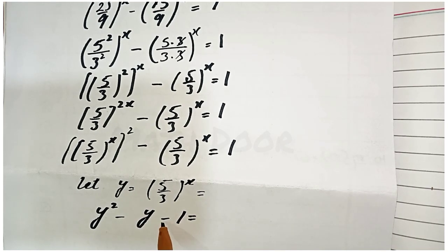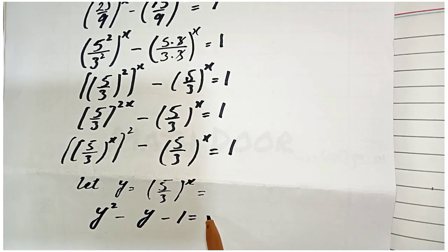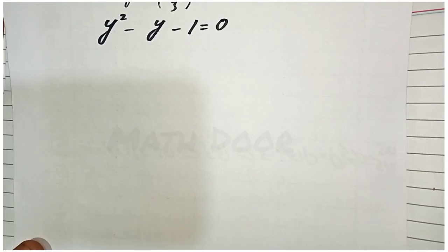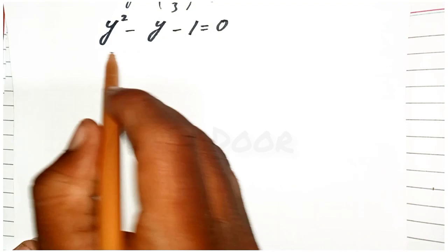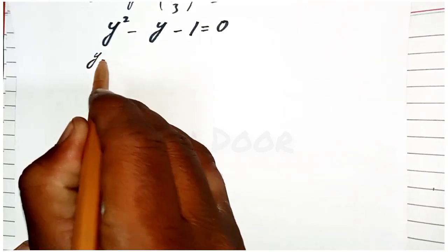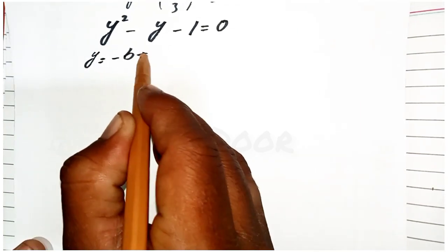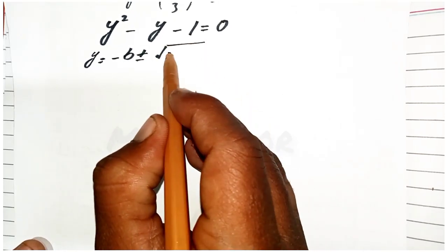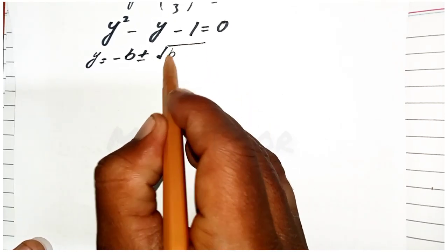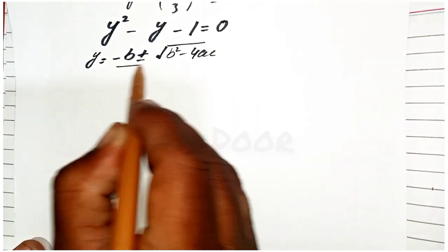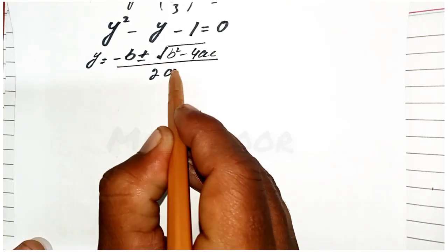We rearrange: y² minus y minus 1 equals 0. Now we apply the quadratic formula: y equals minus b plus or minus square root of (b² minus 4ac), all over 2a.